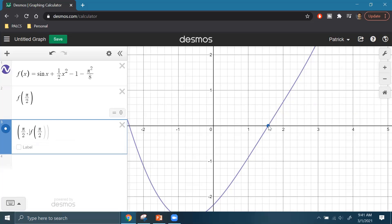And then you can see that that point lies right on the graph. And we confirmed up here that when I plug in π/2, my y value is zero.